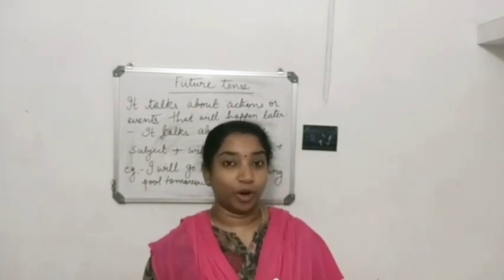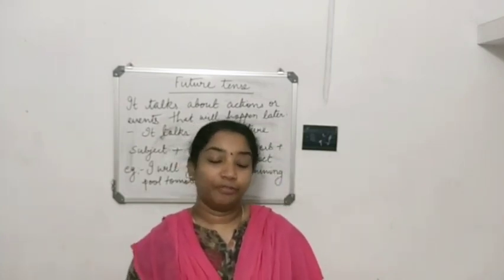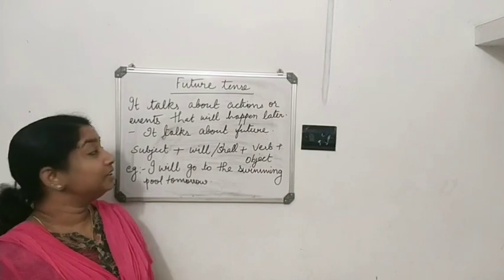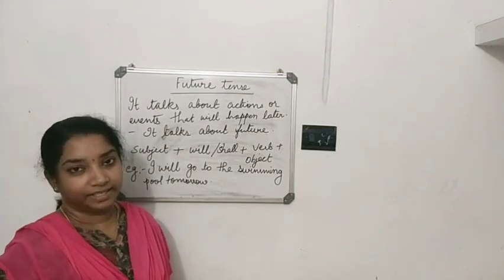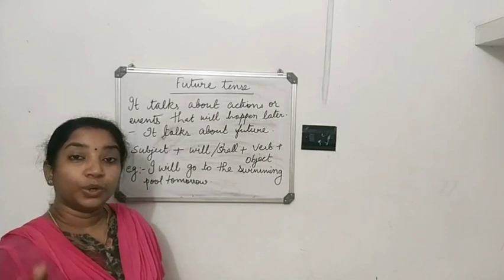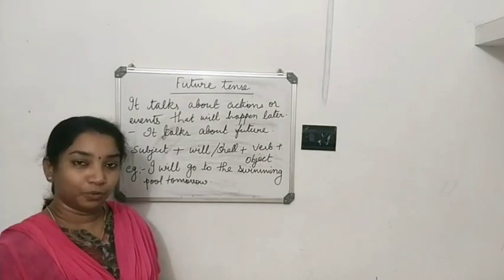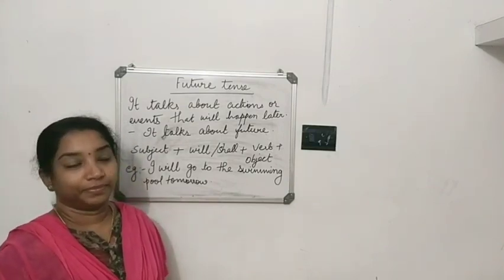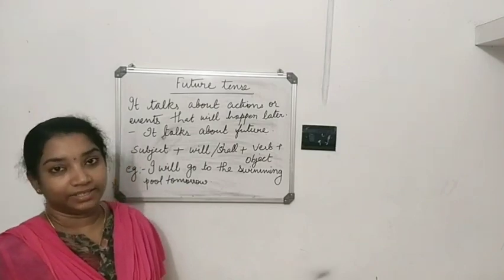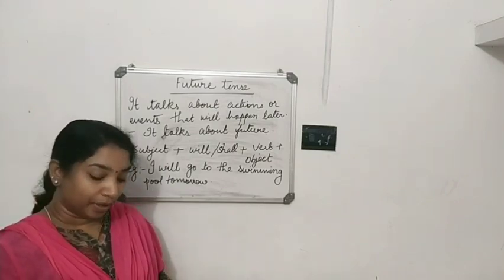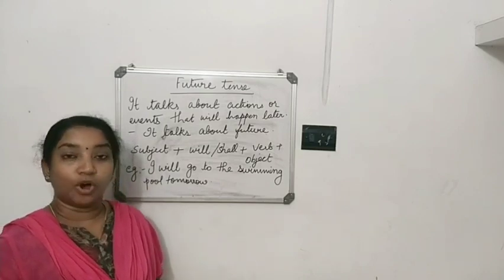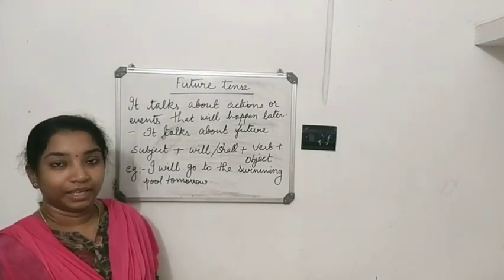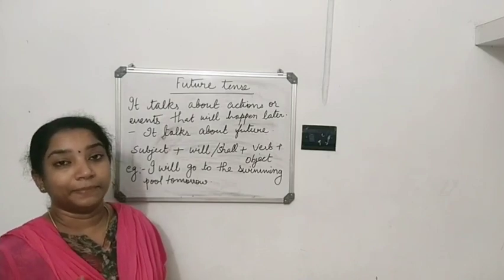So now we are going to study what future tense is. What is simple future tense? It talks about actions or events that will happen later — that is going to happen in the future. It can also be a decision, a promise, or a hope that will happen later. That also we can use in simple future tense.